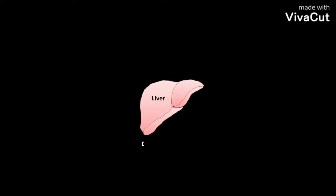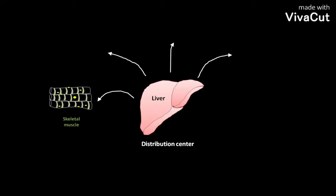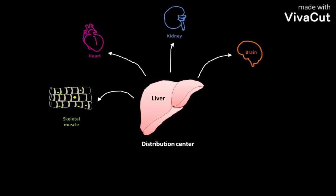The liver acts as a distribution center of the body. It exports nutrients in the correct proportion to organs like skeletal muscles, heart, kidney, brain, etc. Iron (Fe) ions are also stored in the liver.